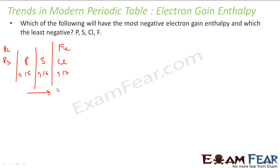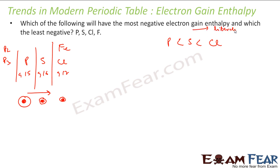As we go across the period from left to right, the electron gain enthalpy becomes more negative, because atomic size is decreasing. So if we arrange in order, it will be: phosphorus, sulfur, chlorine — chlorine liberates the most energy, then sulfur, then phosphorus. Now, fluorine is above chlorine in the group, so logically it should liberate more energy than chlorine on adding a new electron. But as noted, fluorine has a very small atomic size, so it actually liberates less energy because the new electron gets repelled.